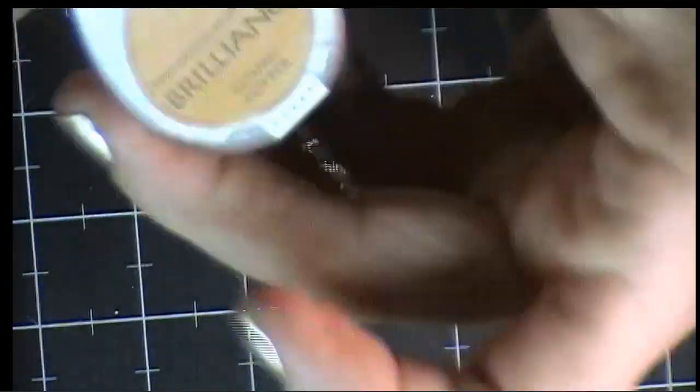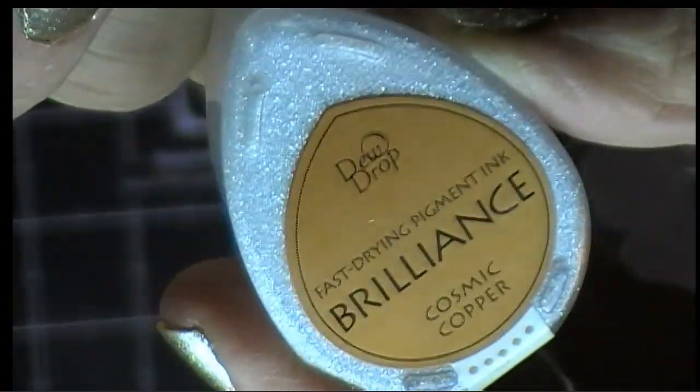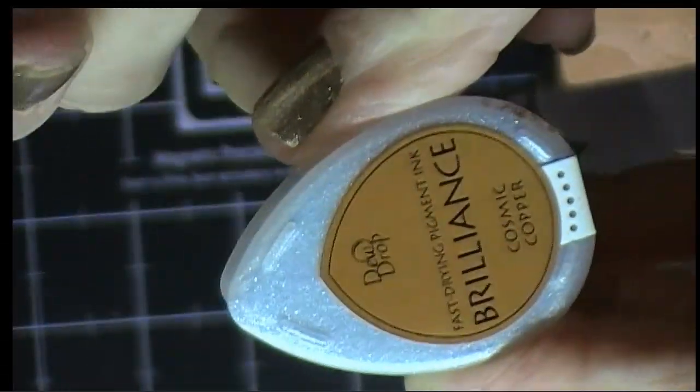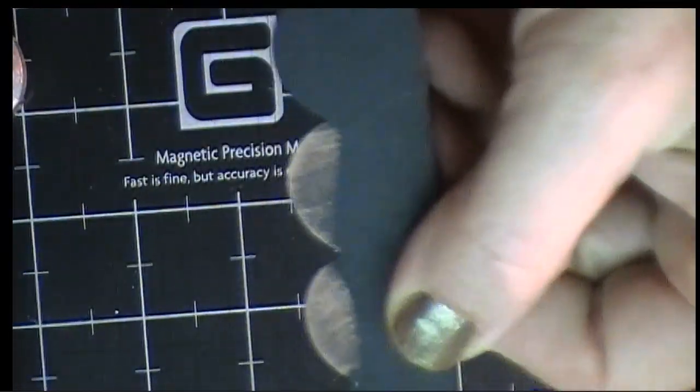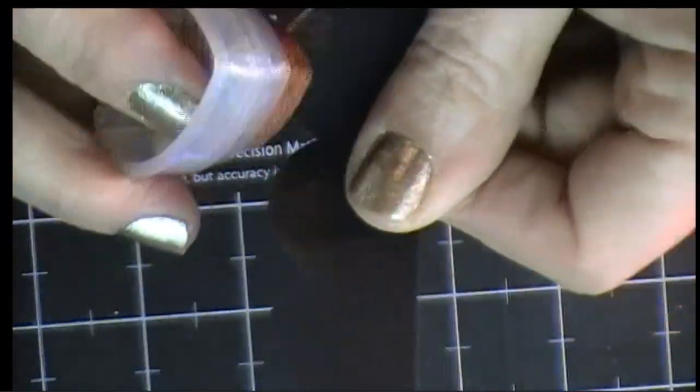This is the Cosmic Copper, which I thought was a really good color because copper is a color that you might have actually found on a rooftop. I also show the silver, which is a little bit more subdued.